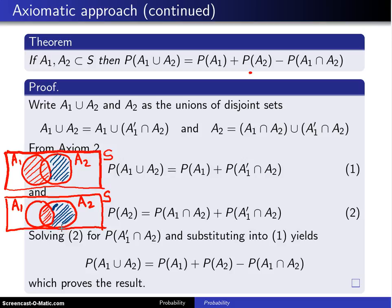So starting with that, then when we apply Axiom 2, the probability of this red area in union with the blue area is the probability of the red plus the probability of the blue. P of A2, in this case, can be written as the probability of what I have shaded in the red plus the probability of what is shaded in the blue.